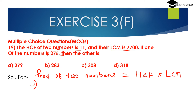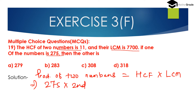So the product of 2 numbers equals HCF multiplied by LCM. One of the numbers is given as 275. So: 275 × second number = HCF × LCM = 11 × 7700.